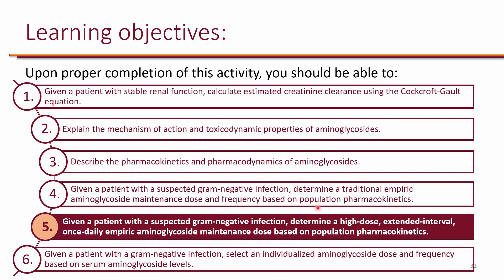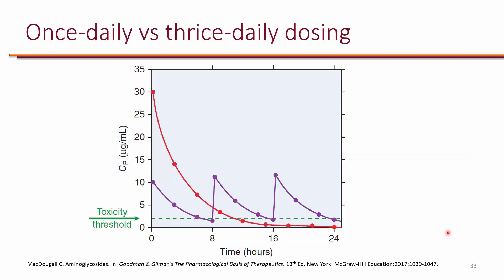The next learning objective is: given a patient with a suspected gram-negative infection, determine a high-dose extended-interval once-daily empiric aminoglycoside maintenance dose based on population kinetics. In the previous objective, we looked at traditional dosing of aminoglycosides. This purple line shows you a classic traditional dosing of aminoglycosides.